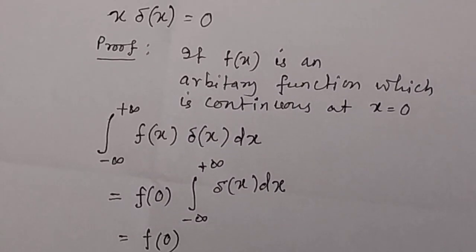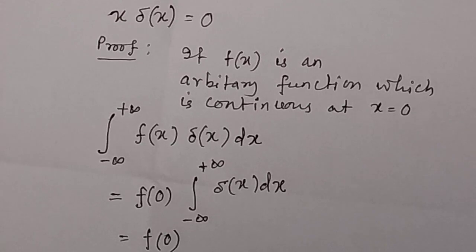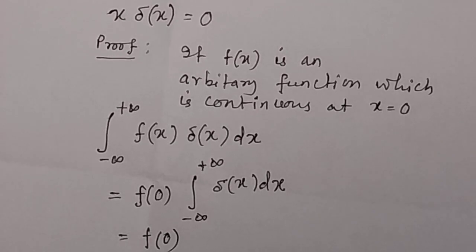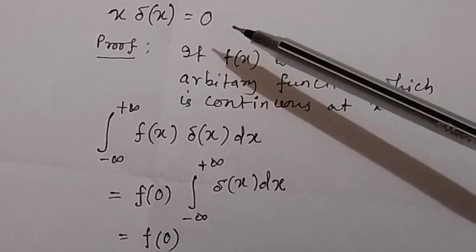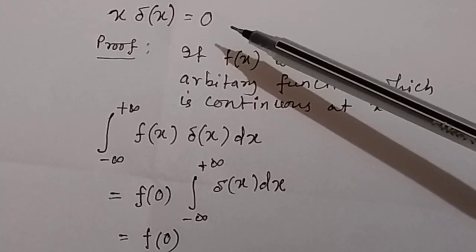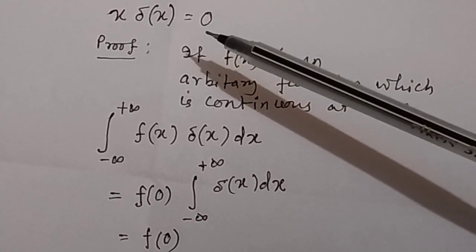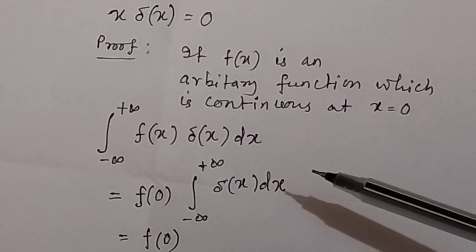In this video we will discuss a very important property of the Dirac delta function: that x·δ(x) is equal to 0. Let us prove how x·δ(x) is equal to 0.